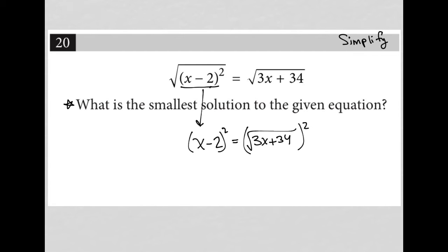I'm trying to avoid that, but it's going to happen anyway. So now I have x minus 2 squared is equal to 3x plus 34. Because when you square a square root, the square root goes away or cancels out.